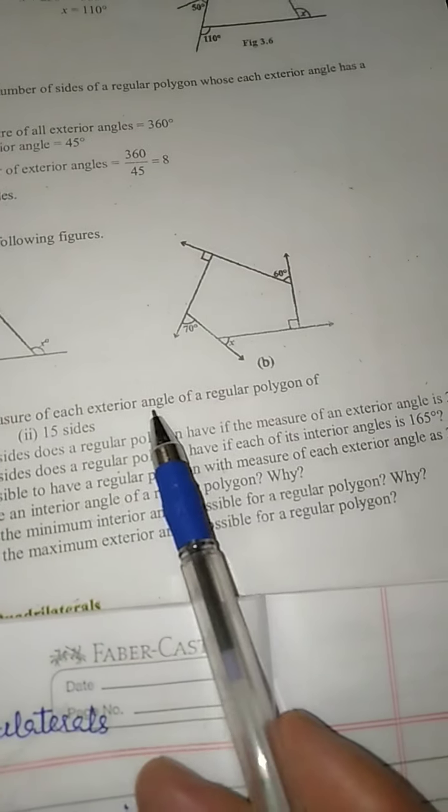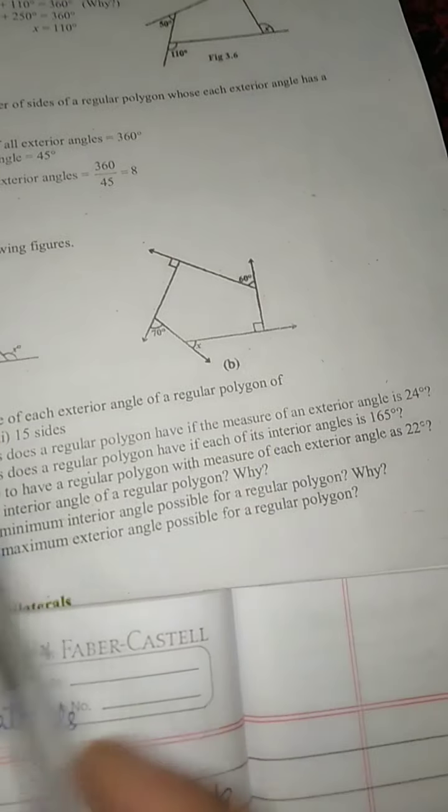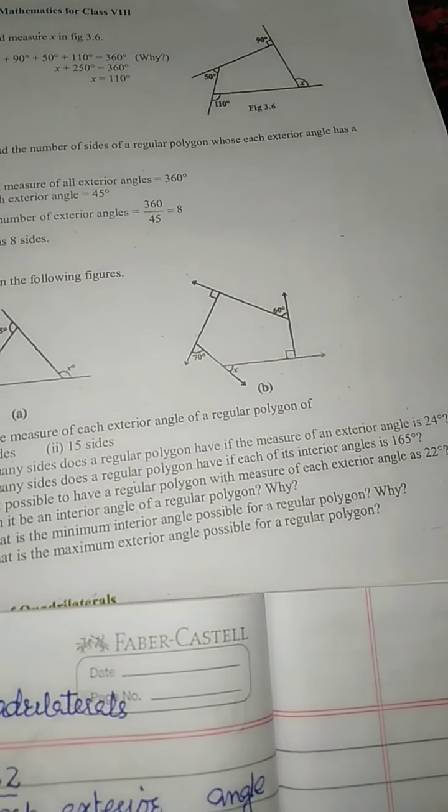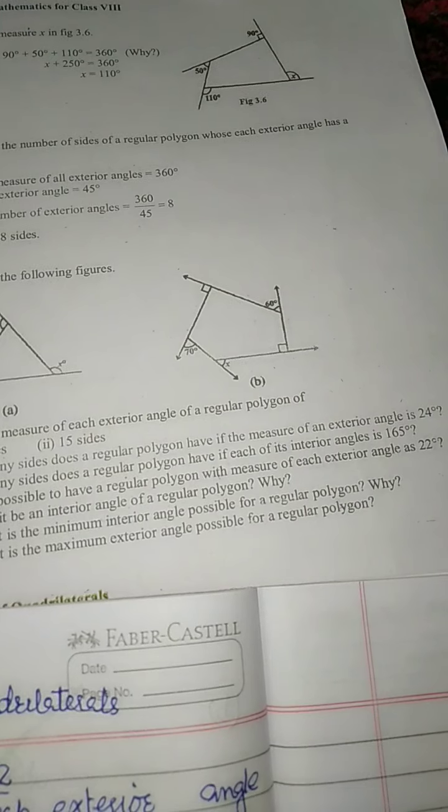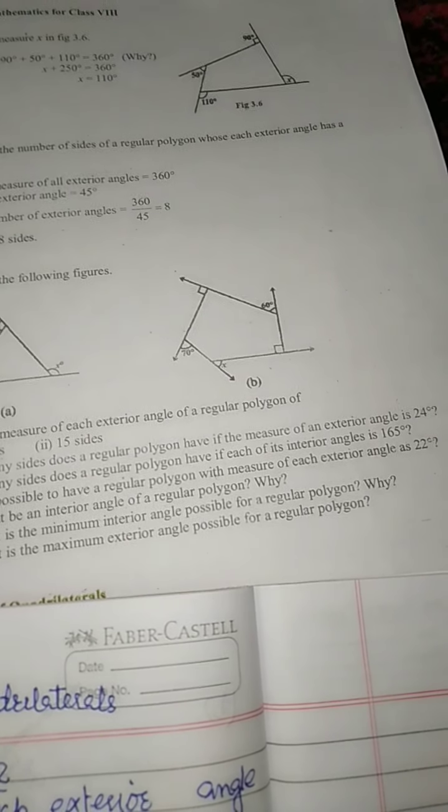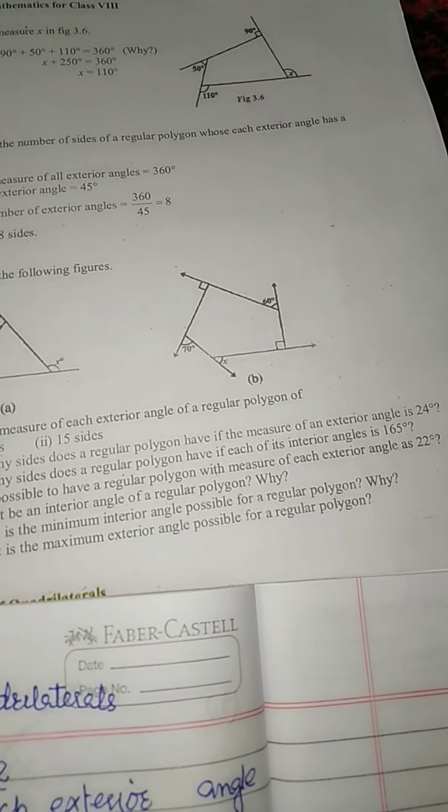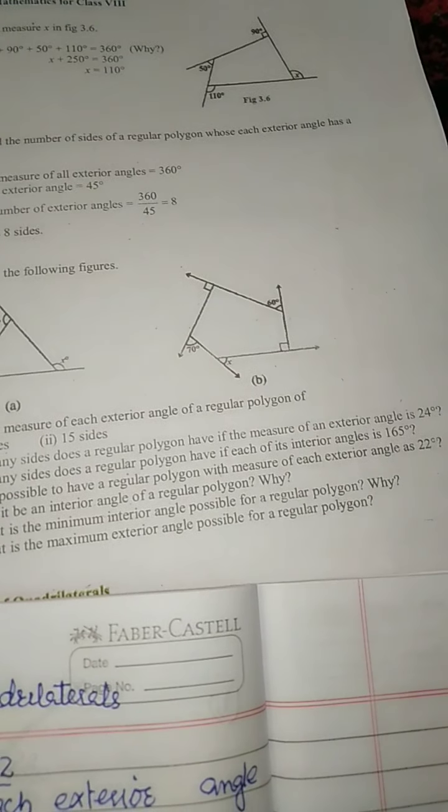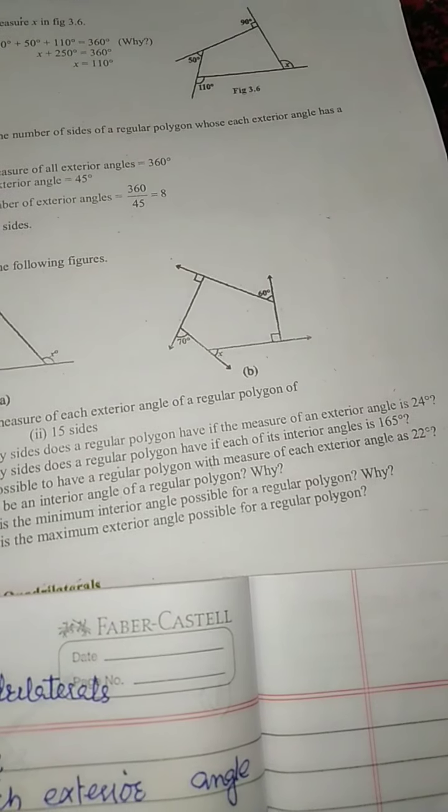We need to find how much each angle will measure if we have a regular polygon. A regular polygon is one in which all sides and all angles are equal.